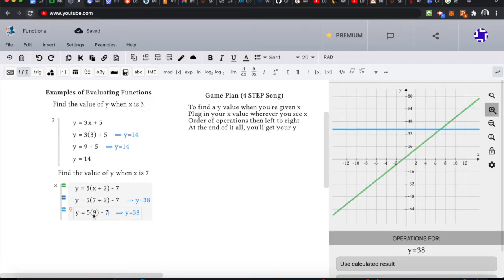So we have multiplication going on right here, so that will be our next step. Y equals 45 minus 7. And then next, we just evaluate left to right. Y equals 38. That is our answer.